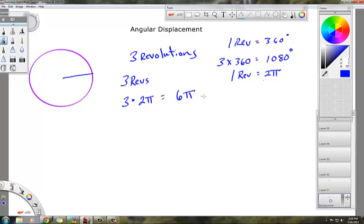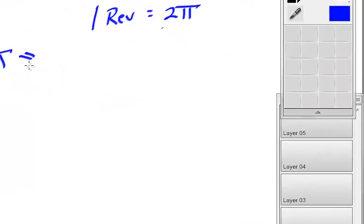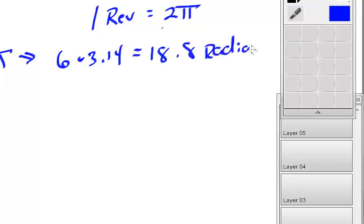Sadly, though, this isn't how you're going to see the answers in the back of the book. The way they're going to do it is they're going to multiply this out, six times pi 3.14. You can use the pi button. And this is going to come out to be 18.8 radians. So this would be your final answer. And this is what we're looking for here. 18.8 radians.